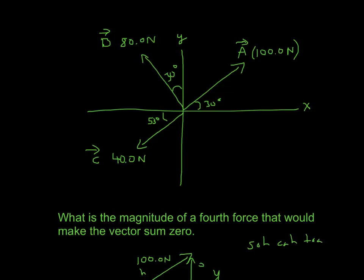In this problem, they ask: what is the magnitude of a fourth force that would make the vector sum zero? They give you a graph, and what we have to do is separate the forces into their x and y components. The reason we can't just start canceling right now is because they're made up of different amounts of x and y components, so they're not exactly the same thing.